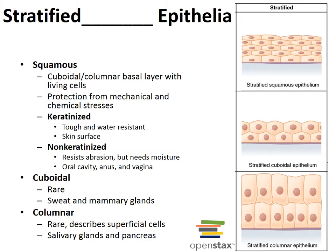Stratified cuboidal epithelium is very rare in the body, found in some sweat and mammary glands, and is typically two cell layers thick. Stratified columnar also has a limited distribution, with small amounts found in the pharynx, some glandular ducts, and the male urethra.